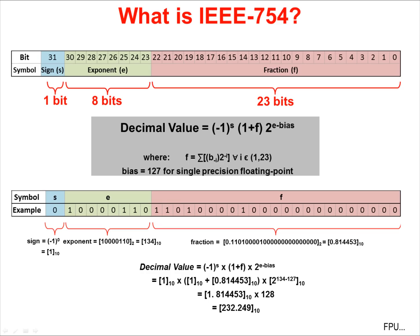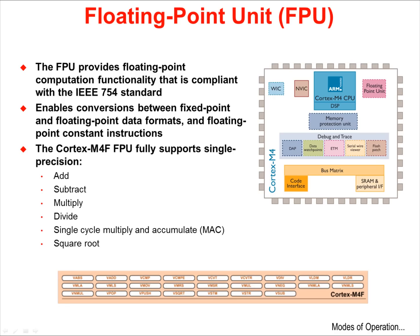The floating point unit on the Tiva C-series devices provides floating point computation functionality that is fully compliant with the IEEE 754 standard. The floating point unit supports single precision adds, subtractions, multiplies, divides, single cycle multiply and accumulate, or MAC, and square roots. The figure at the bottom shows the additional instructions added to the base Cortex-M4 set by the floating point unit.